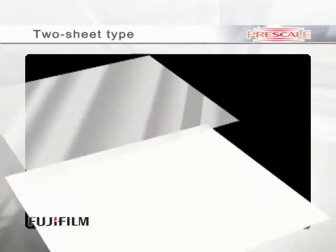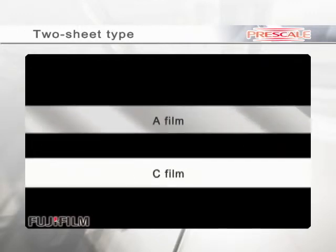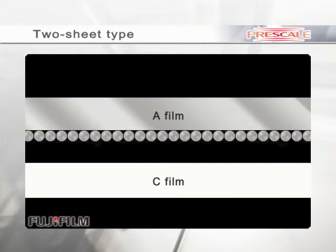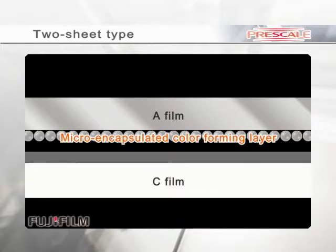The two-sheet type consists of an A-film and a C-film. The surface of the A-film is composed of a micro-encapsulated color-forming layer. And the C-film has a color-developing layer on its surface.